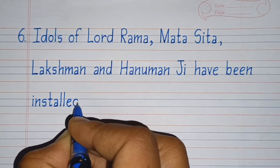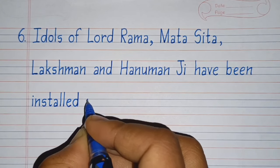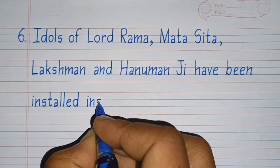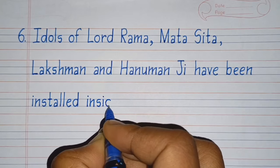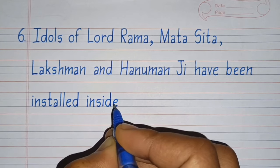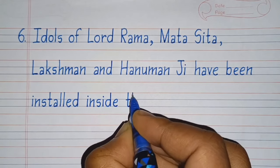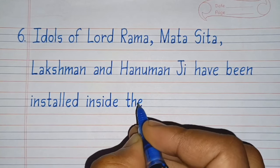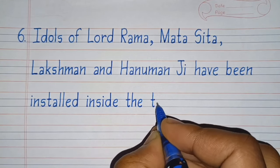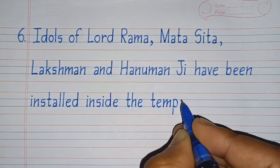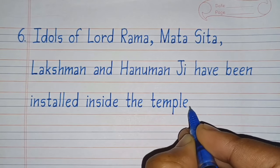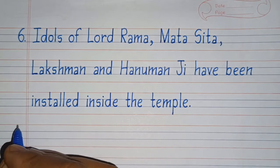Sixth line: Idols of Lord Rama, Mata Sita, Lakshman, and Hanumanji have been installed inside the temple.